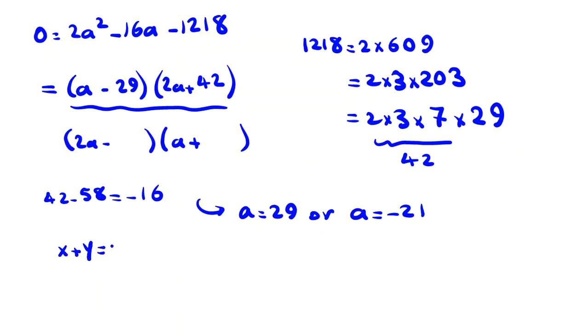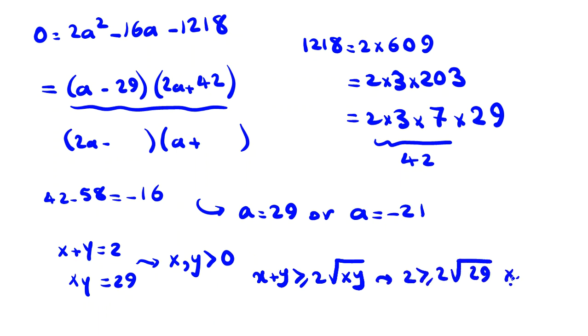If also xy is positive 29, so we can conclude because the product is positive, so both of them are negative or positive. The sum of them is also positive, so x and y are positive. So by AM-GM, you can say x plus y is greater than or equal to 2 root xy. So you conclude 2 is greater than or equal to 2 root 29, and that's a contradiction. And the possible case is when a equals negative 21.